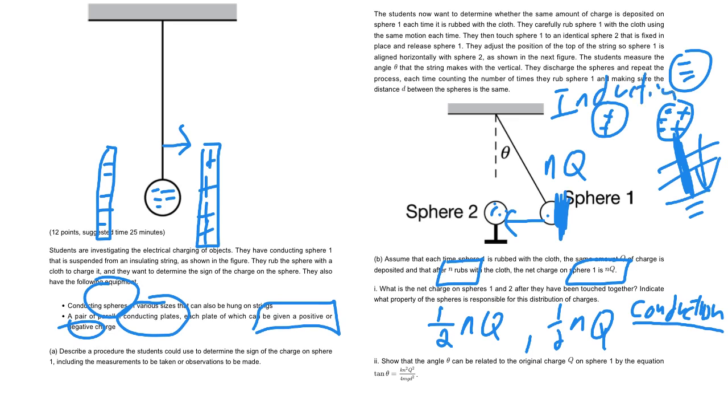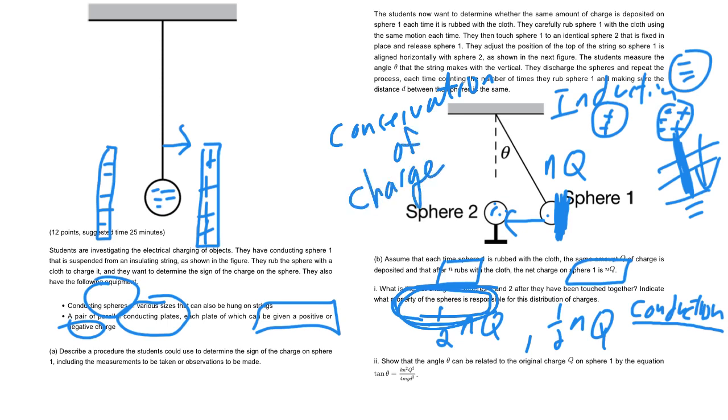And then friction, that's actually how you charge up the sphere in the first place. So one other property maybe you talked about here, when it says property of the spheres, you might have said something like conservation of charge. I think that's a fine response as well. It's kind of unclear about what exactly they're asking about, but that's true as well. Charge needs to be conserved. If we started with nq, then each one's going to take on half, because you want the total to add up to nq.